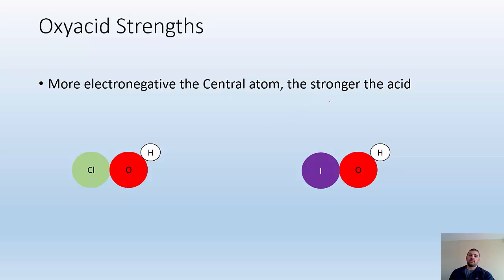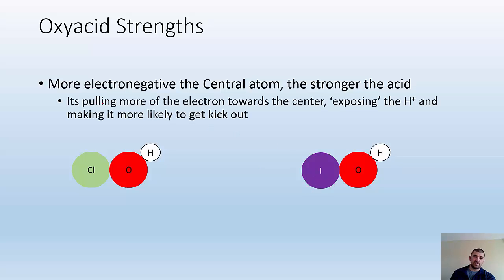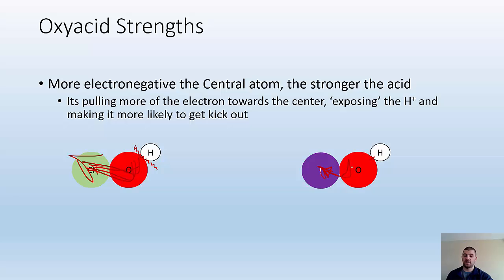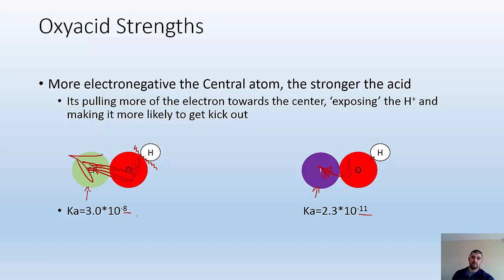The more electronegative the central atom is, the stronger the acid is as well. Taking a look at ClOH versus IOH — chlorine is more electronegative, so it's going to have a stronger pull on electrons, which is going to weaken that O-H bond compared to IOH. Iodine is not as electronegative, so it's going to be harder to break this bond because it's not as polarized. Looking at the Ka's — the only difference is chlorine versus iodine — we get 3.0×10⁻⁸ for ClOH and 2.3×10⁻¹¹ for IOH, about a factor of 10³ difference just from changing that one atom.